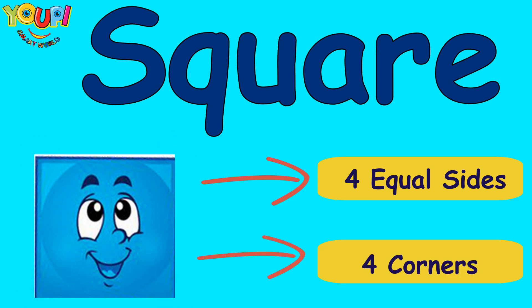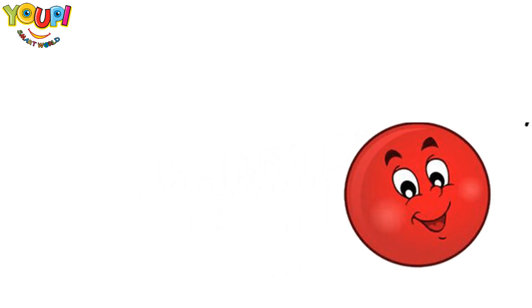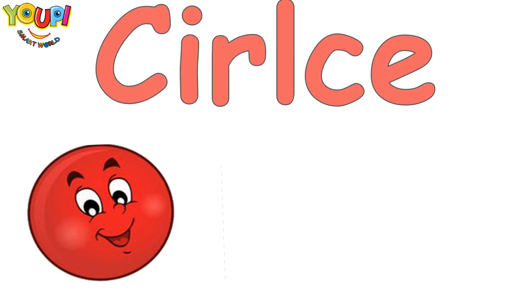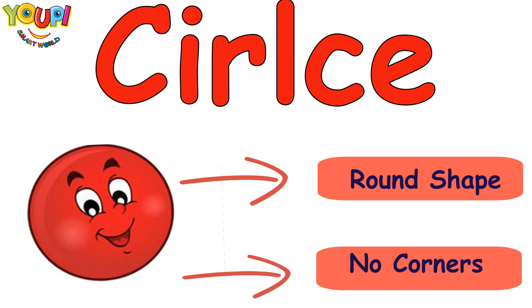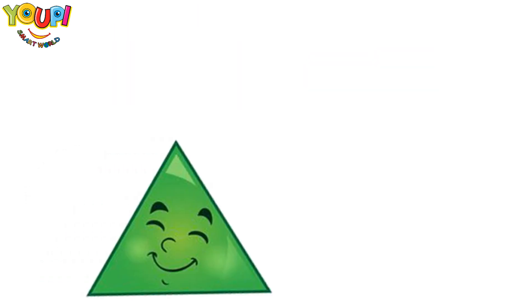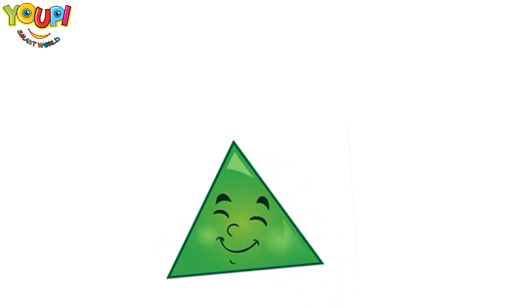What shape is this? What's the name of this shape? That's right, it's a circle! It has a round shape and it doesn't have any corners.